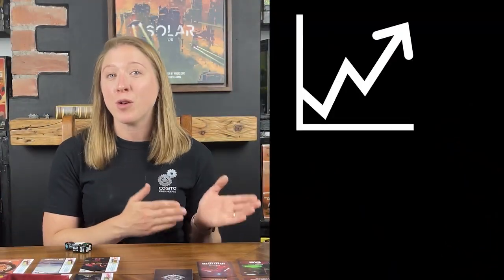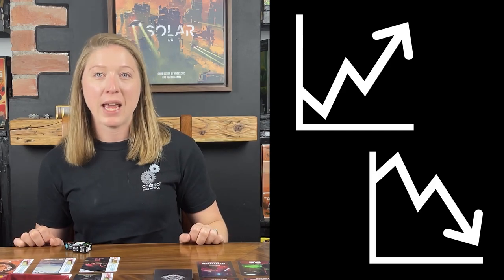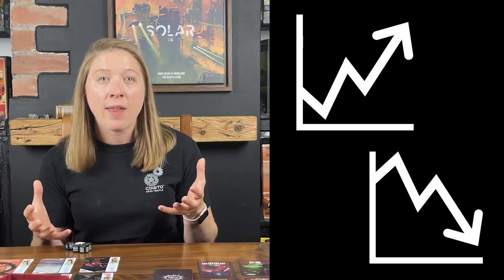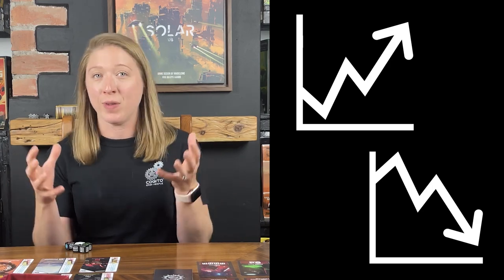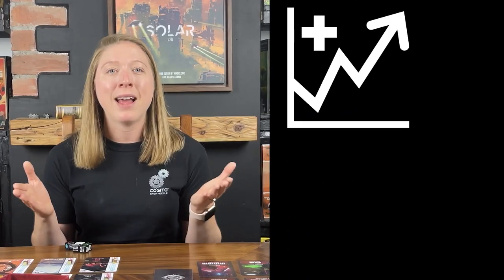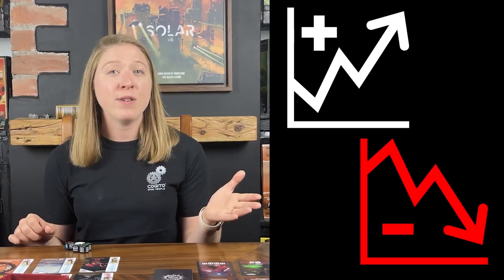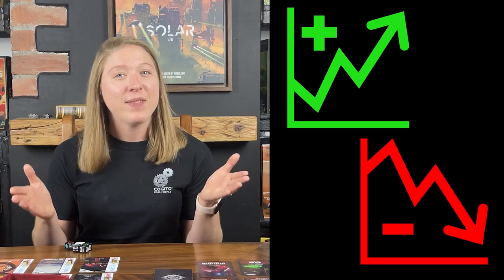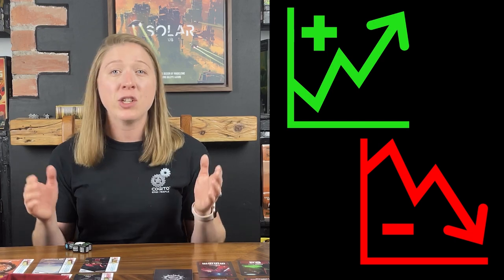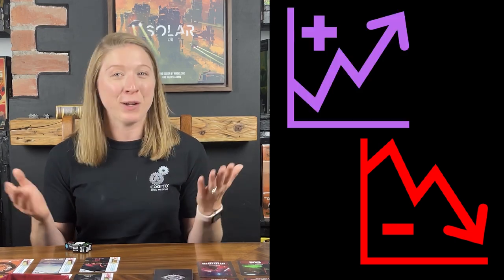Take the symbols to increase and decrease stock values, for example. They initially started as simple arrows, as we felt the symbols were simple, related to each other, and congruent with the actions they represented. But after playtesting, the feedback was that the two symbols were too similar. To fix this, we added plus and minus symbols on them and changed the colors to red for down and green for up. This generally worked, but it did not work as well with colorblind playtesters, so we changed the colors from red and green to purple and orange.